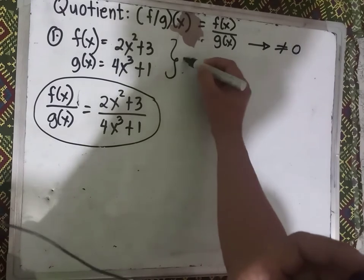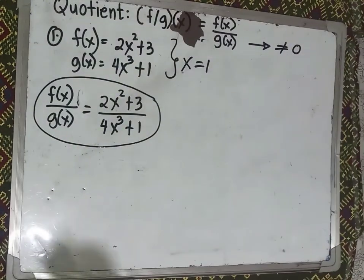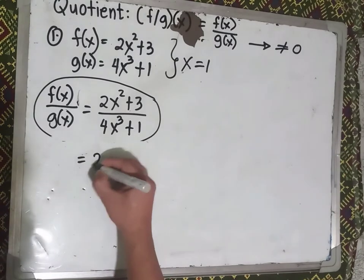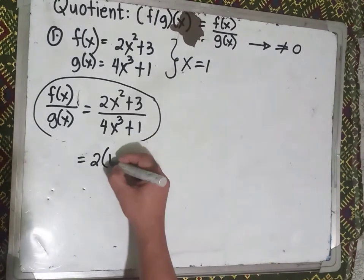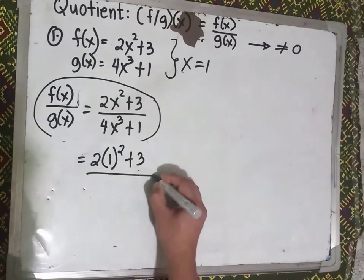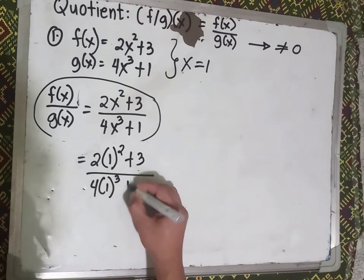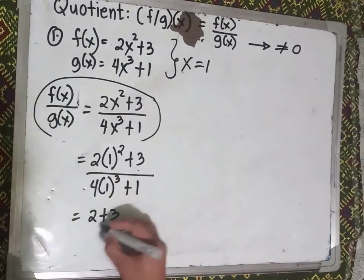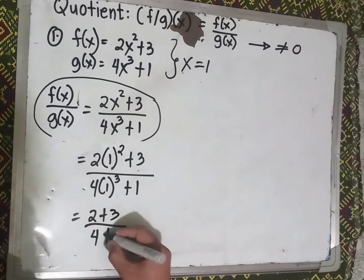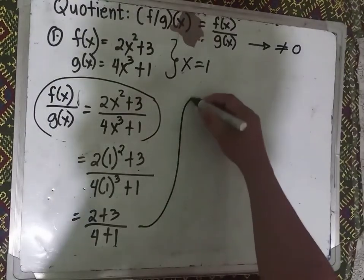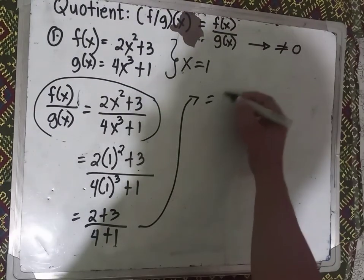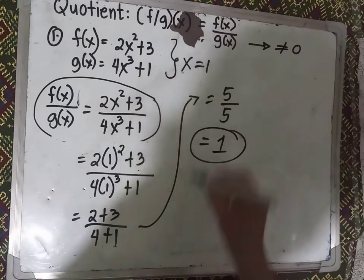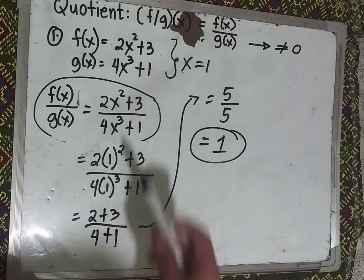What if we substitute a value for x? If x equals 1, just substitute into the equation: 2 times 1 squared plus 3, over 4 times 1 cubed plus 1. That gives us 2 + 3 = 5 over 4 + 1 = 5.